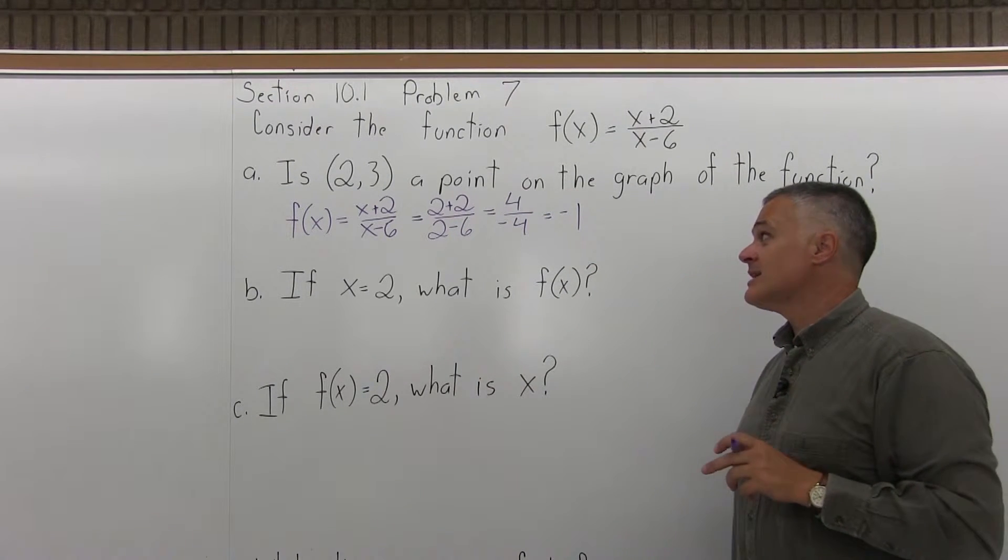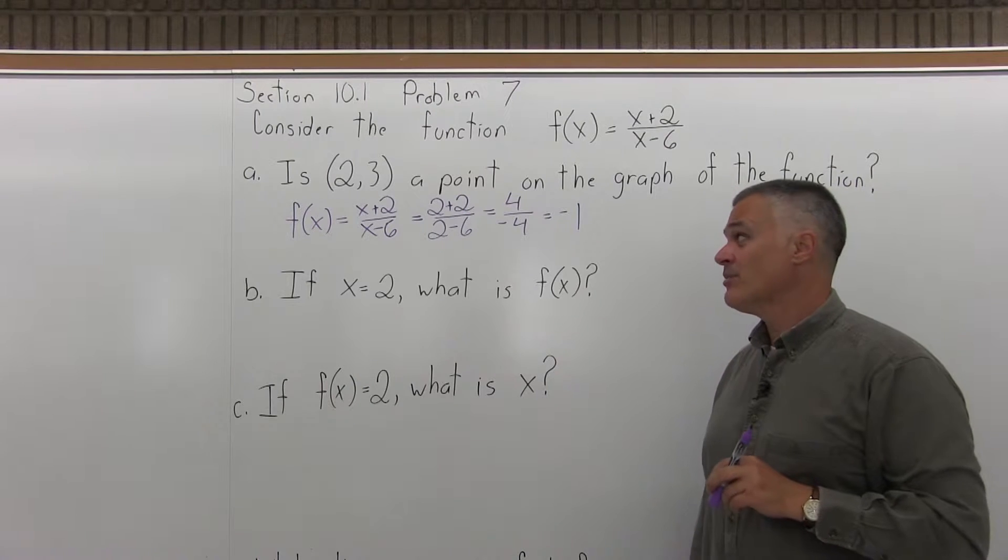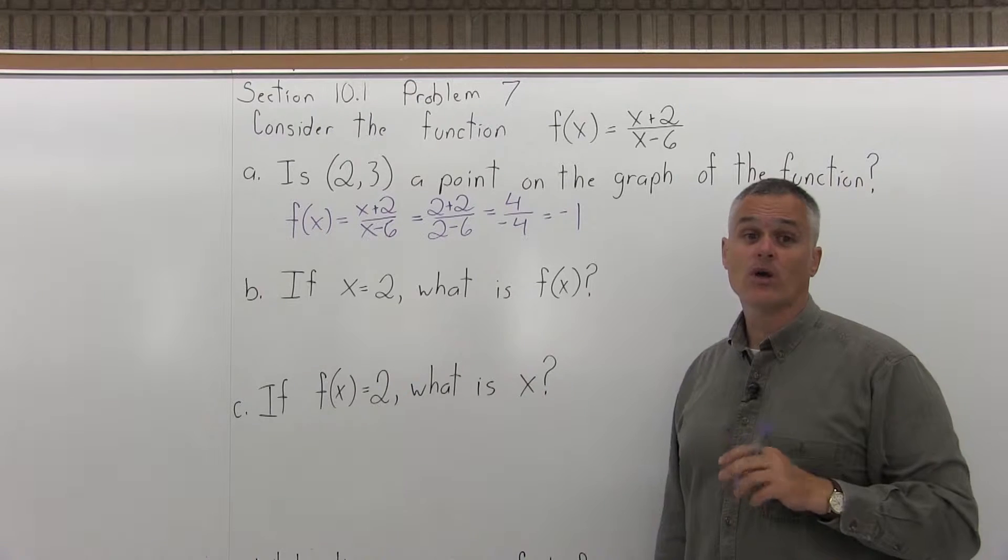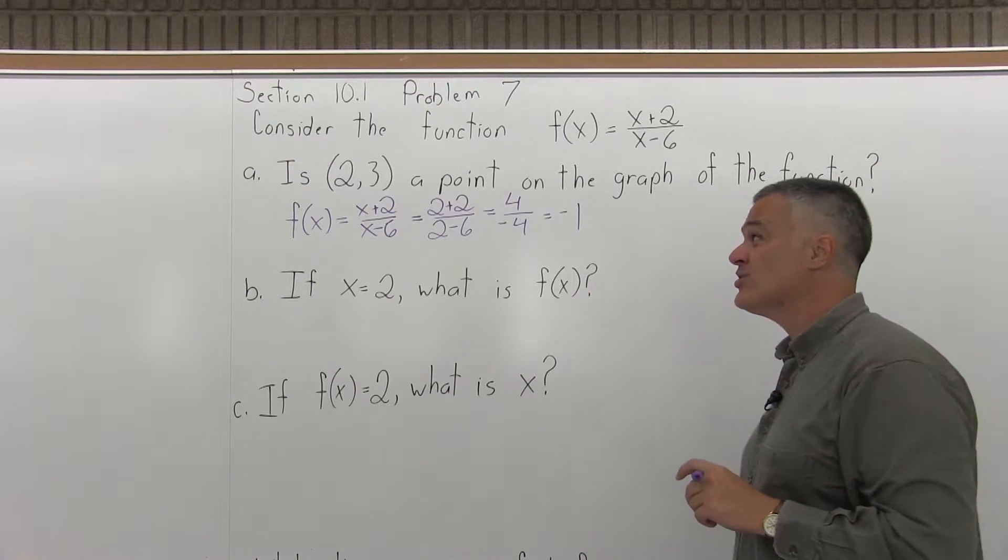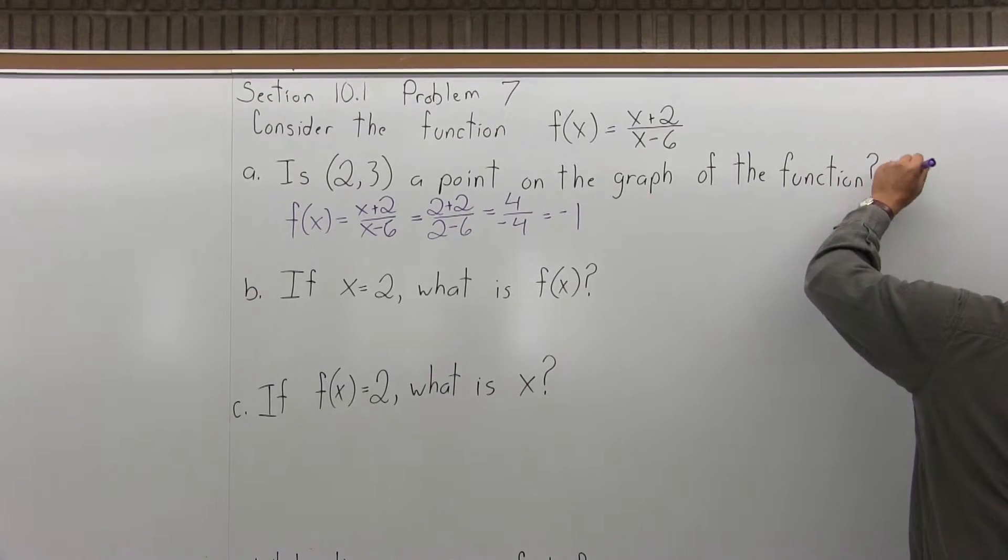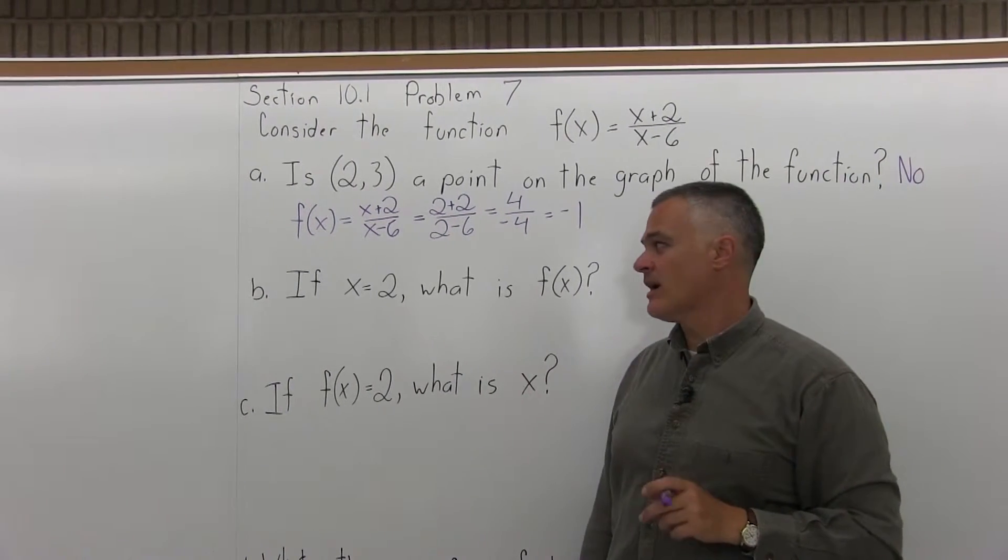But the thing is, I do not get out a 3. If I put in a 2, I get out a negative 1. So, the point (2, -1) is a point on the graph, but (2,3) is not a point on the graph. So, the answer to part A of this question is no. (2,3) is not a point on the graph.